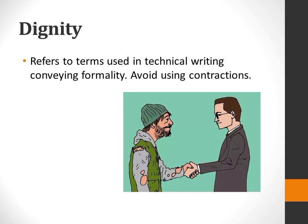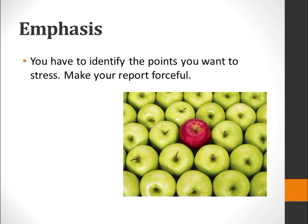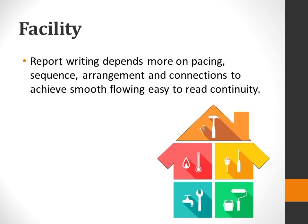D for Dignity: It refers to terms used in technical writing conveying formality — avoid using contractions. E for Emphasis: You have to identify the points you want to stress and make your report forceful.